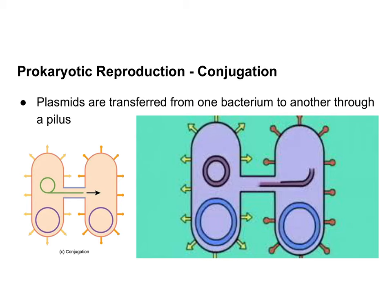Yet another way prokaryotes increase genetic diversity is through conjugation. When we talked about prokaryote morphology, we discussed the pilus — plural pili, sometimes called a sex pilus — a cellular extension that allows two bacteria to connect to each other. One prokaryote can then give the connected prokaryote genetic information, usually in the form of plasmids, those small accessory rings of DNA.